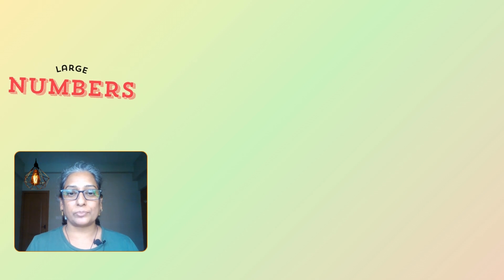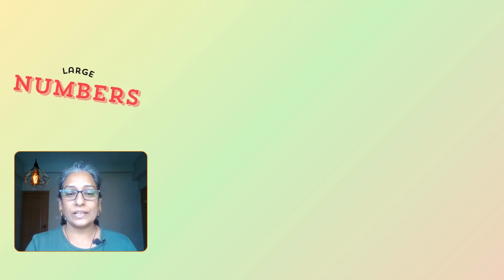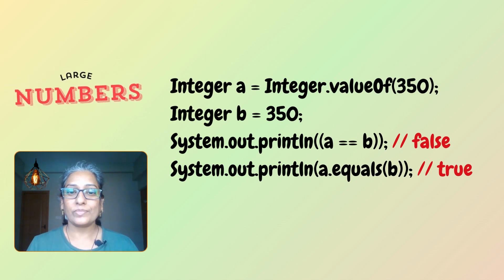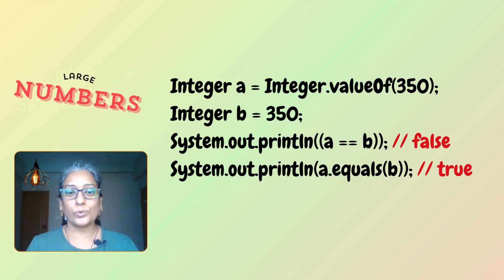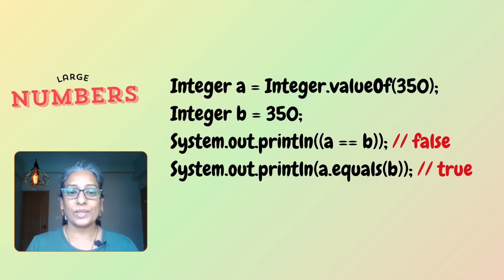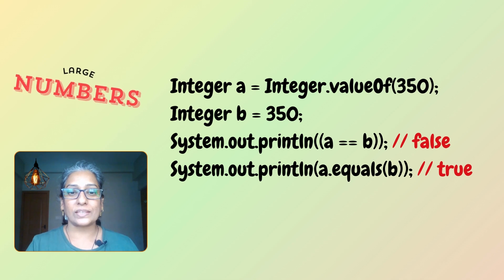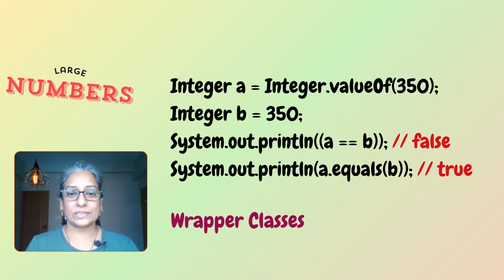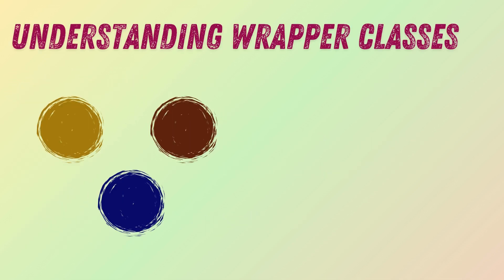Not really. Things change with a larger number like 350 or 1000. Look at this example — why is the output different here? To understand that, we need to look at Java wrapper classes.